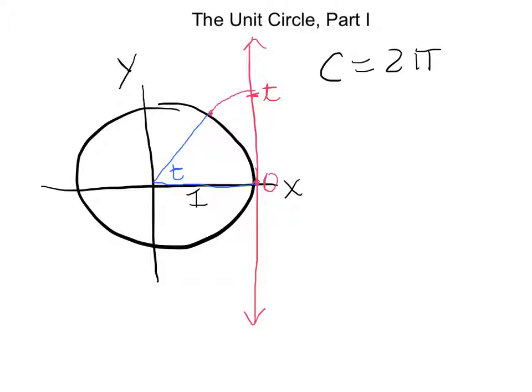It's very important to understand that because we're in a unit circle, this central angle t and the number t on the number line have exactly the same measure. That is the key, and that's why we have to use a unit circle.